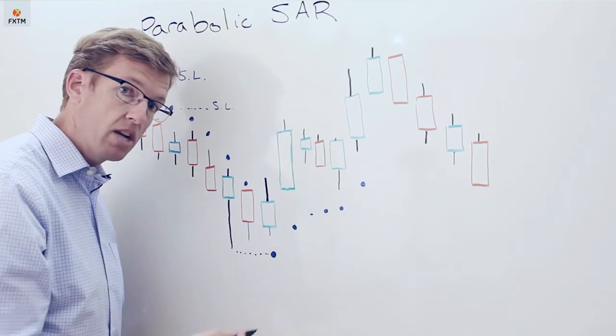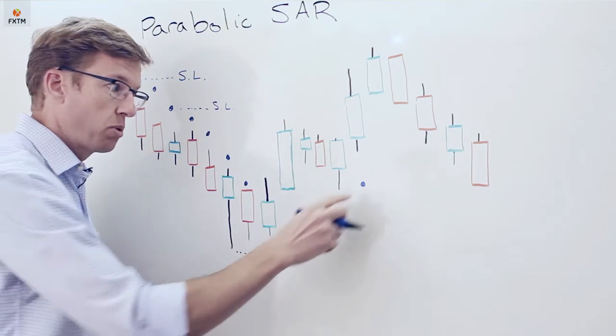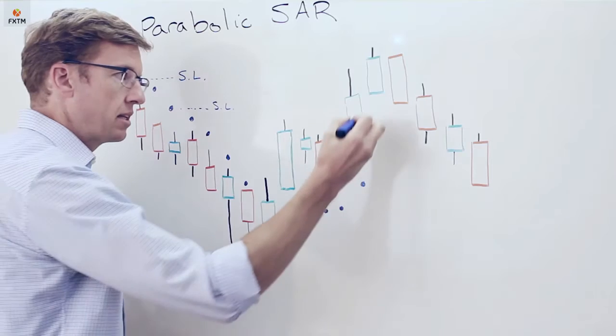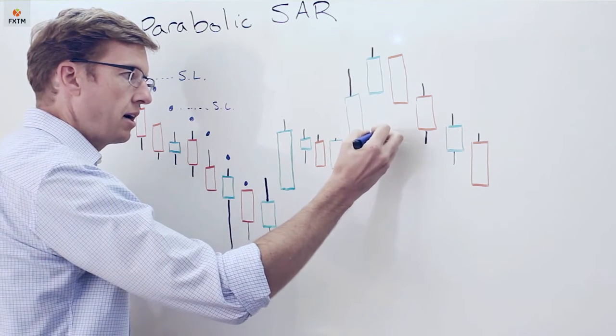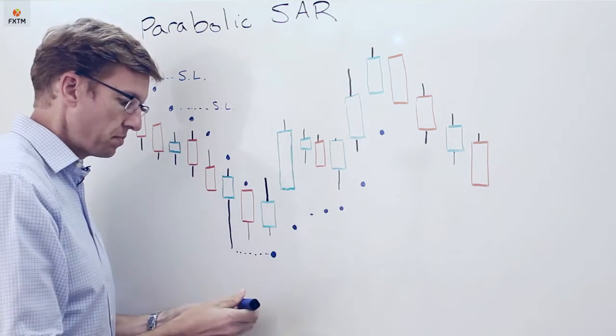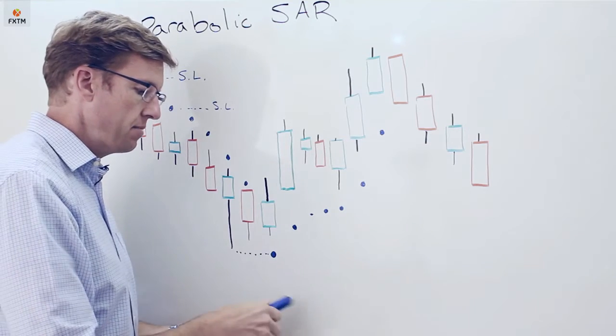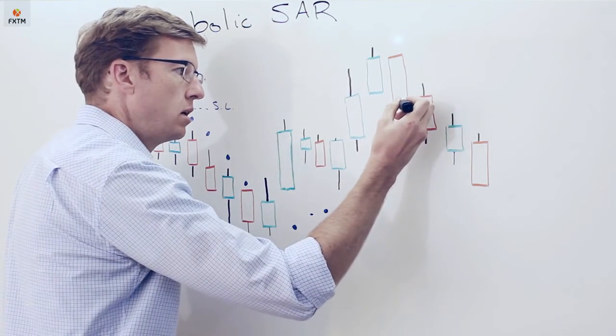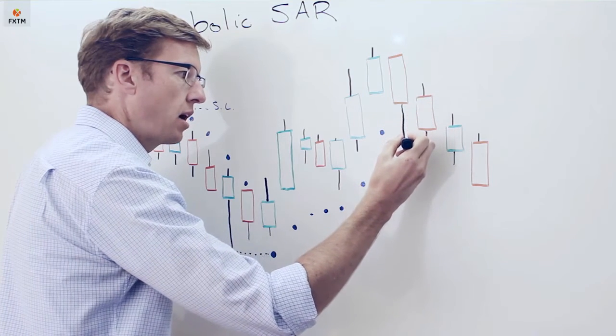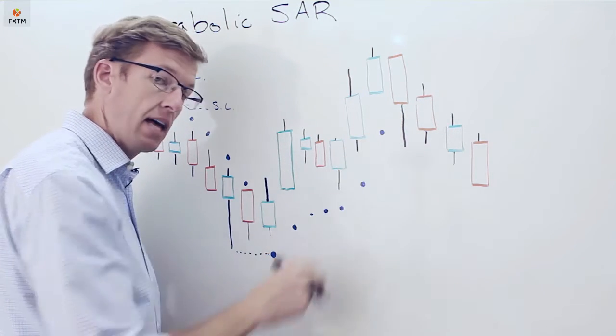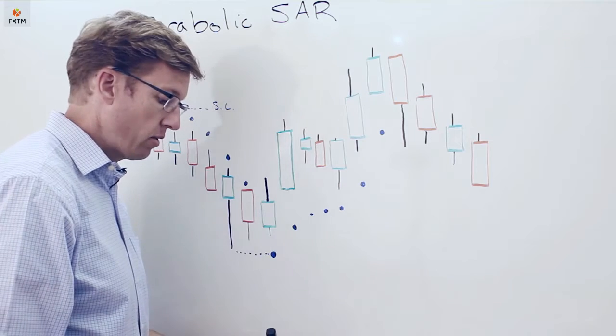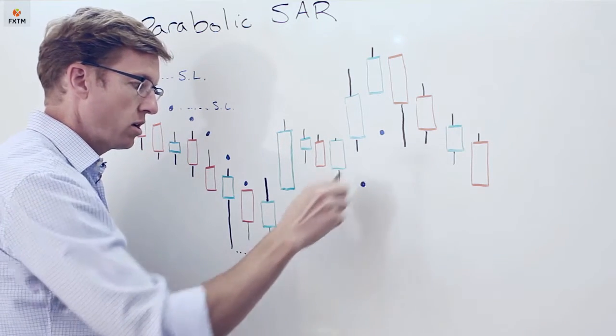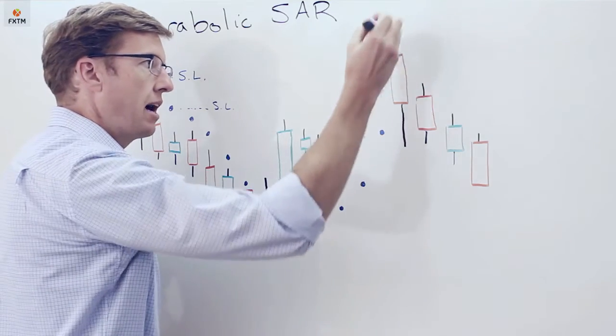As new highs are created, that acceleration will continue to put the dot closer and even closer. Let's say we have the dot here quite close, and then hypothetically we have a bad day where a low comes all the way down to where that dot would have been and takes that out. So we have a day where a reversal has occurred.